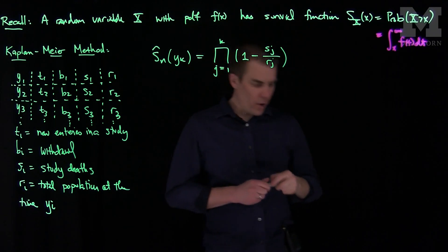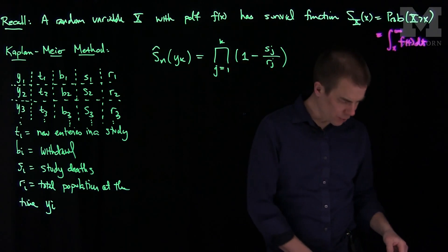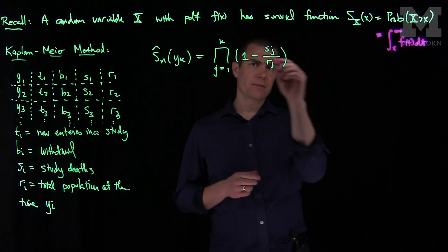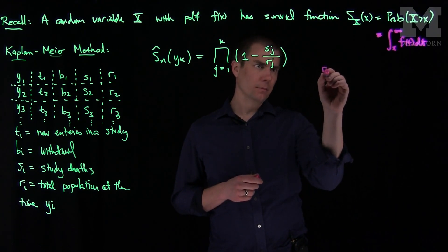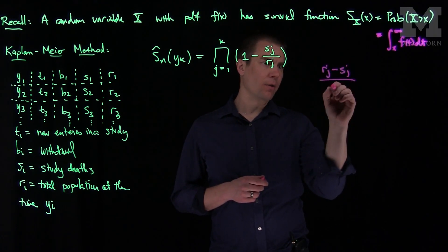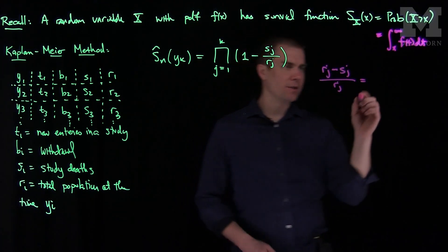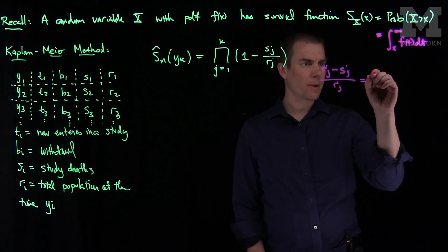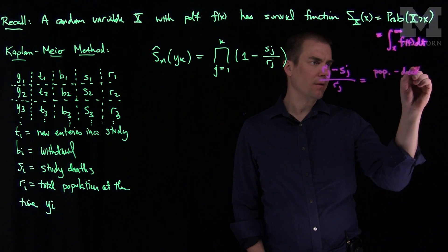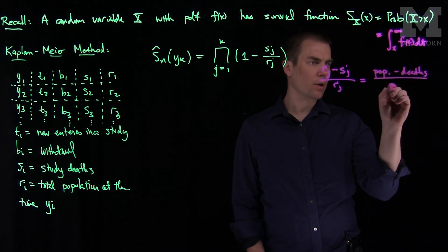And so this gives us one way of approximating the survival function. We should note that the structure of these terms is the following: each of these factors has the form (r_j - s_j)/r_j.